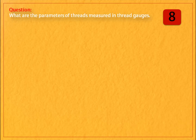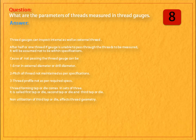Question: what are the parameters of threads measured in thread gauges? Answer: thread gauges can inspect internal as well as external threads. After half or one thread, if the gauge is unable to pass through the threads to be measured, it will be assumed not to be within specifications. The cause of not passing the thread gauge can be error in external diameter or drill diameter, or pitch of thread not maintained as per specifications, or thread profile not as per required specs.